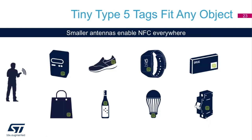With a smaller antenna, Type 5 tags are being integrated into many more products — including space-challenged wearables, clothing, product packaging, and directly onto items such as wine bottles. The ST25DV tag also offers additional features with the Trust 25 digital signature, 64-bit passwords, and a 64-bit unique ID per device that can assist with product authentication and identification.